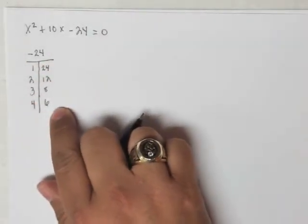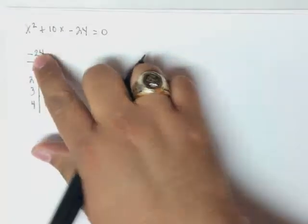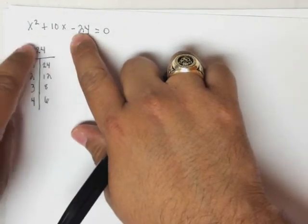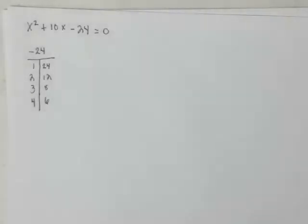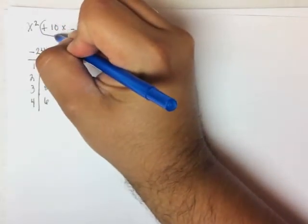But we are looking for the ones that have a product of negative 24, that have a difference of positive 10. So this positive 10 is important right here, so I'm going to circle it.